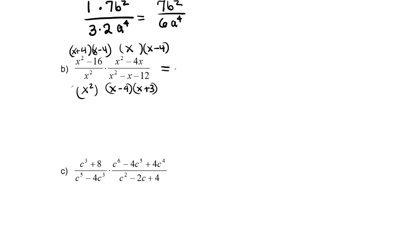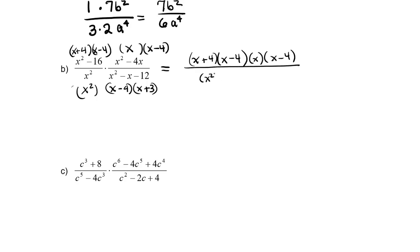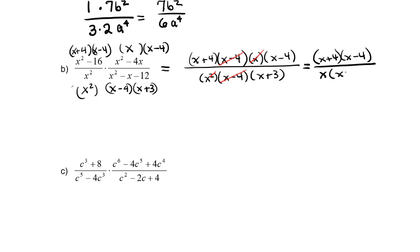The x² just comes down, so those are all my factors. I'm going to rewrite them in a nice long list: (x+4)(x-4)(x)(x-4) all over x² times (x-4)(x+3). I'm now going to divide out (x-4) and (x-4), and divide the x with one of the x's in the denominator. Whatever's left is the answer: (x+4)(x-4) all over x(x+3).